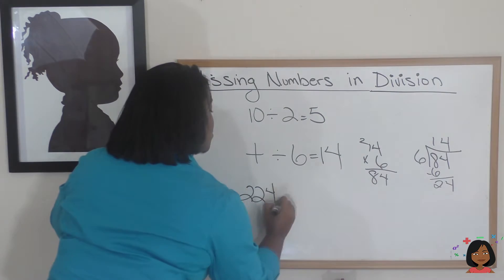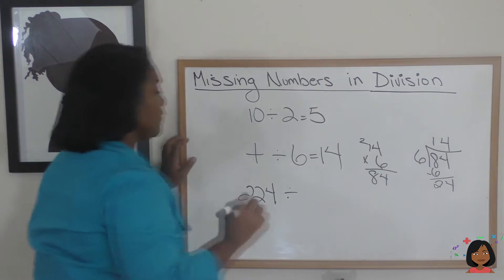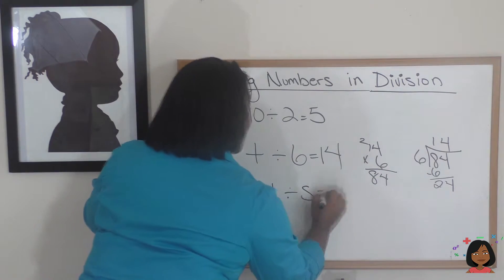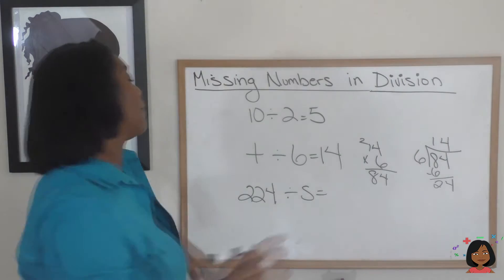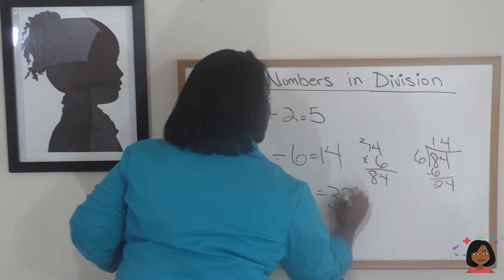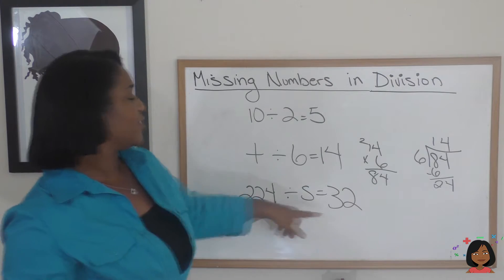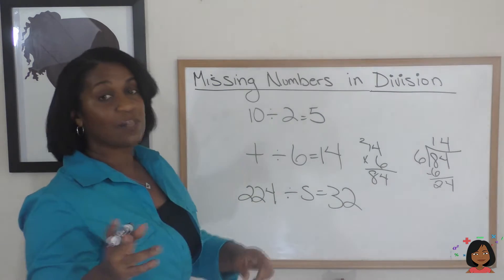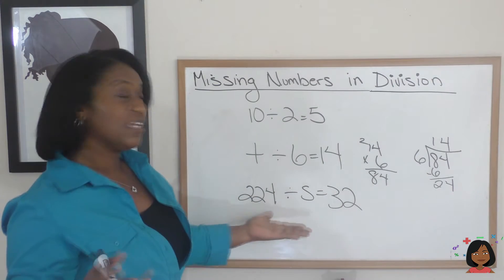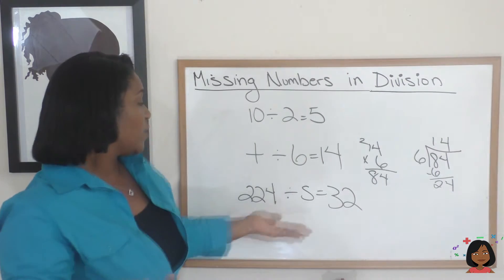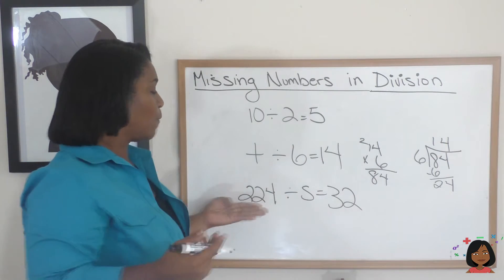I've got 224 divided by - we're going to use the letter S as our missing number - and the quotient is 32. So how would we find it? This time we wouldn't use multiplication. We'd actually need to use division here. We can say, what's 32 into 224?